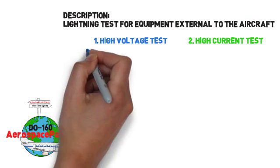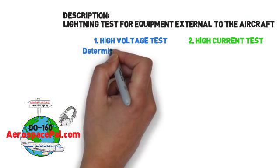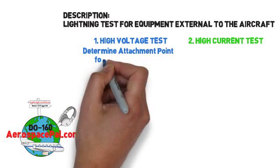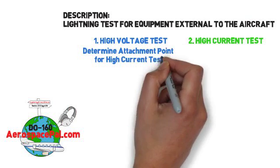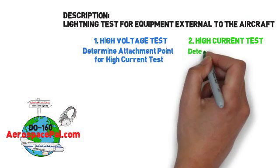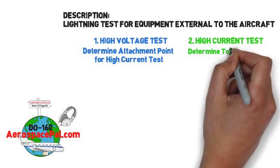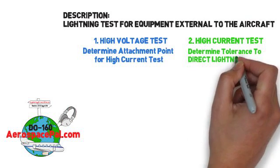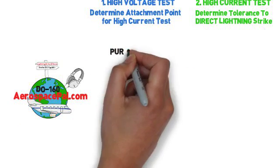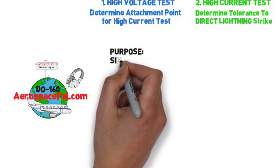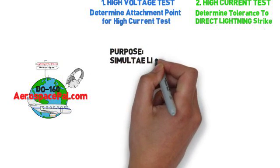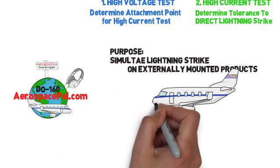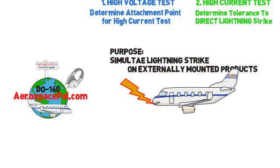Direct effects is tested on externally mounted products by means of a high voltage and high current simulated lightning strike. The high voltage test will determine the attachment location for the high current test, which will evaluate the damage due to the direct lightning strike. The purpose is to simulate a direct lightning strike on products that are externally mounted on the aircraft.